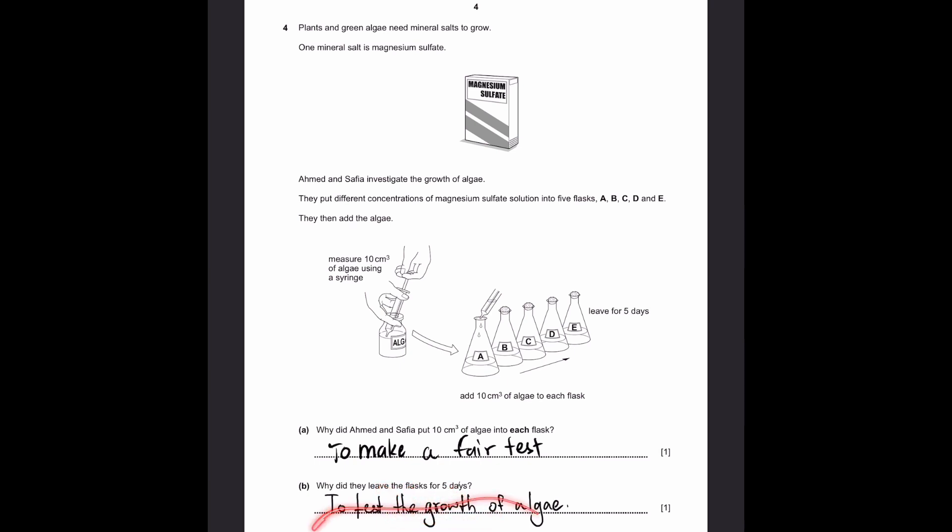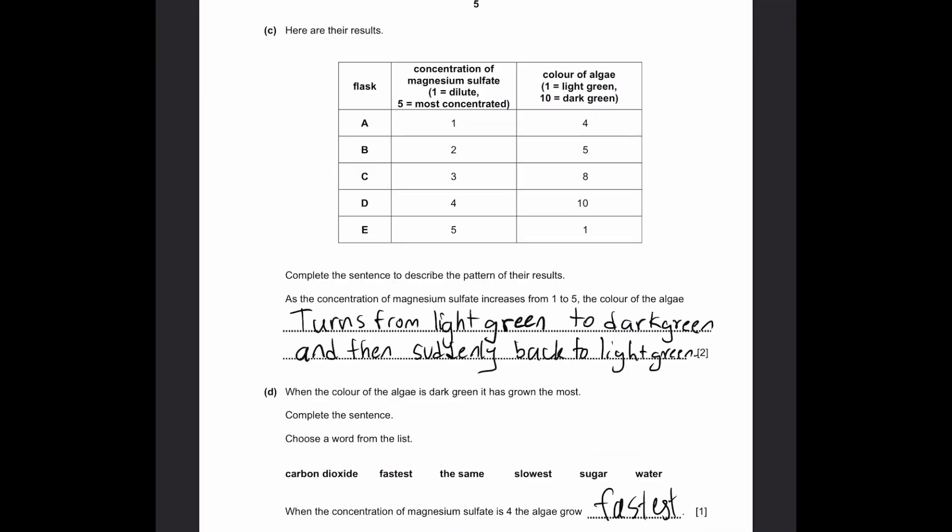Part B. Why did they leave the flask for five days? The experiment is to investigate the growth of algae. To test the growth of algae, we need to leave it for at least a few days, which means five days is a good medium for that.